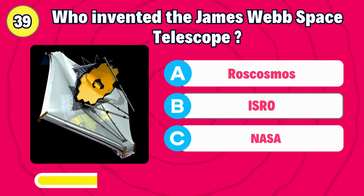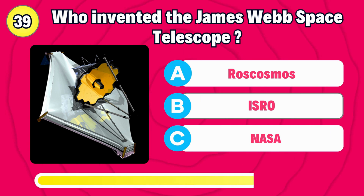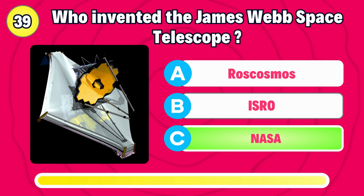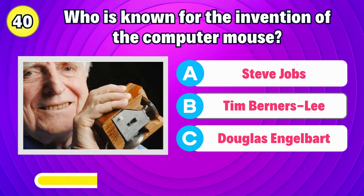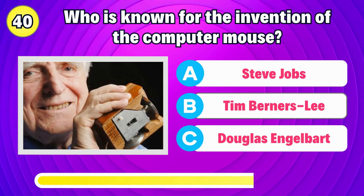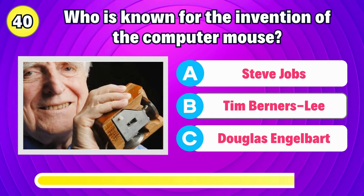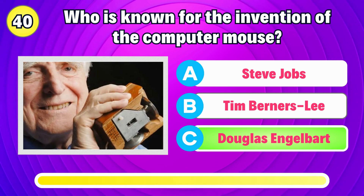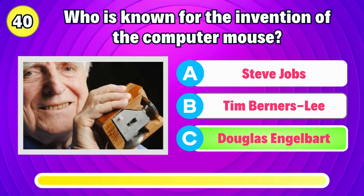Who invented the James Webb Space Telescope? Right, it's by NASA. Who is known for the invention of the computer mouse? Correct, it's Douglas Engelbart.